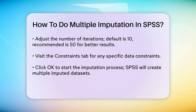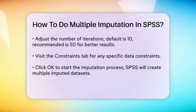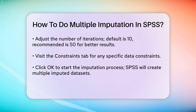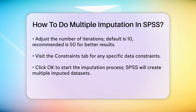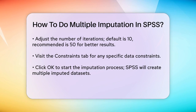SPSS will generate multiple imputed datasets, which will be stored in a new SPSS file. These datasets will be stacked on top of each other, and a new variable called imputation will be added to distinguish between the original and imputed datasets. This imputation variable is crucial because it allows you to analyze the data separately for each imputation, similar to the split file option in SPSS.